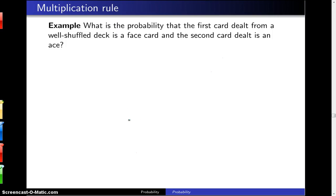What is the probability that the first card dealt from a well-shuffled deck is a face card and the second card dealt is an ace?